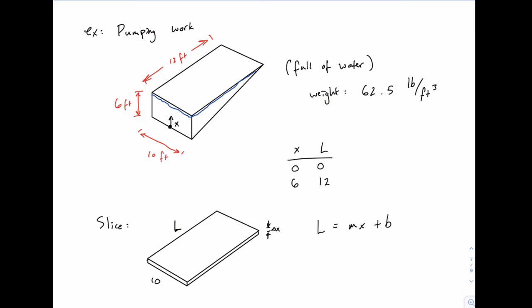Again, notice that because we chose the origin at the bottom, where the length was zero, that simplifies things for us just a little bit, because our intercept will be zero. When x is zero, L is zero.